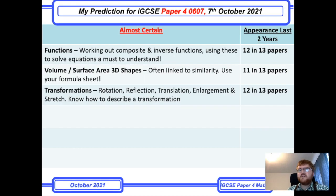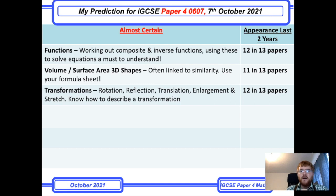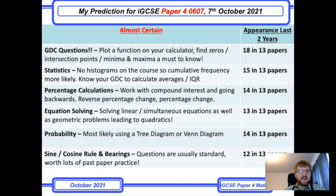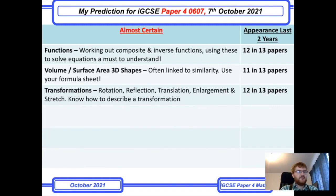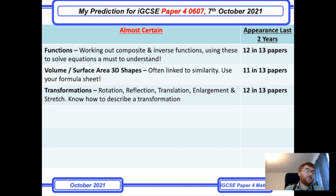Those are my predictions for IGCSE 0607 for the October/November exam series. Make sure you've gone over the topics I've mentioned: GDC questions, statistics, percentage calculations, equation solving, probability, sine and cosine rule, functions, volume and surface area of 3D shapes, and transformations. That will set you on the way to getting a good grade. If you like the content, give it a like — it helps. Subscribe if you'd like as well. Bye for now.